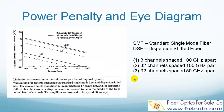Since the generated 4-wave mixing power increases with link length, this sets a limit on the transmit power per channel as a function of the link length. This limit is plotted in the left figure for both standard single-mode fiber and dispersion-shifted fiber for three cases: 8 channels spaced 100 GHz apart, 32 channels spaced 100 GHz apart, and 32 channels spaced 50 GHz apart.